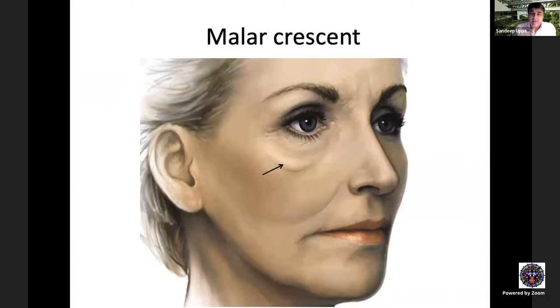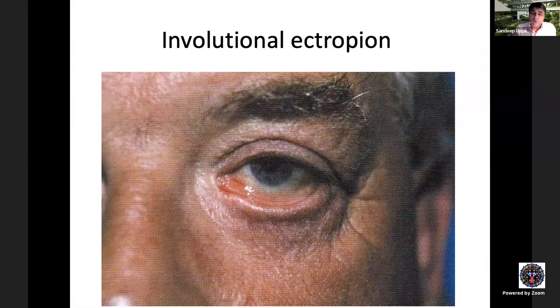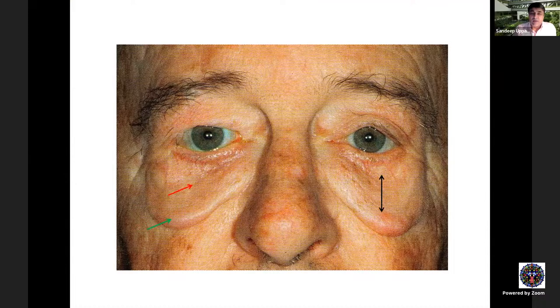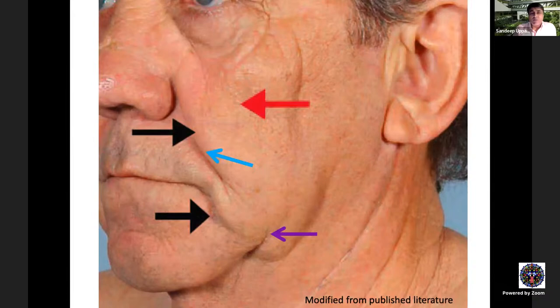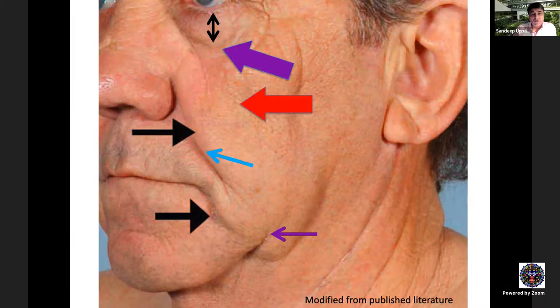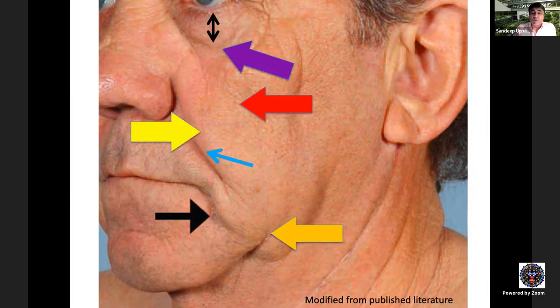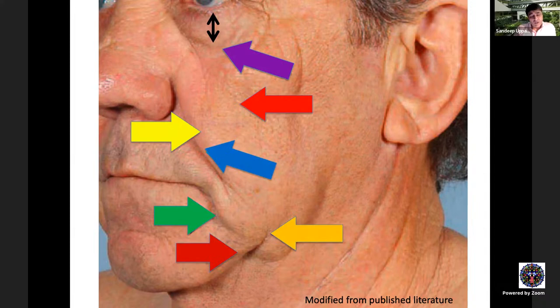Further aging changes include festoons and malar mounds or malar bags, involutional ectropion, and lower lid elongation as the orbicularis oculi muscle relaxes. Skeletonization of tissues in the lower lid and orbital area occurs. The lower lid appears longer, a tear trough deformity develops, and descent of midface tissues occurs alongside some atrophy, contributing to jowl formation and prominence of the nasolabial fold.